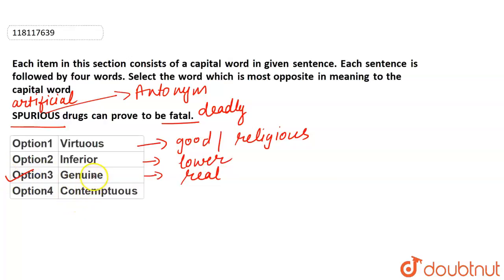So option three, correct option. Because the fourth option is contemptuous, and that means disrespectful. So this can't be opposite meaning. So option three, which is genuine, is the correct answer. Thank you.